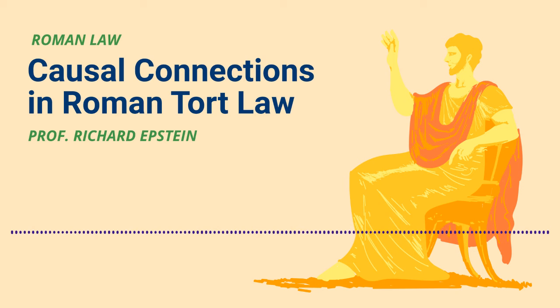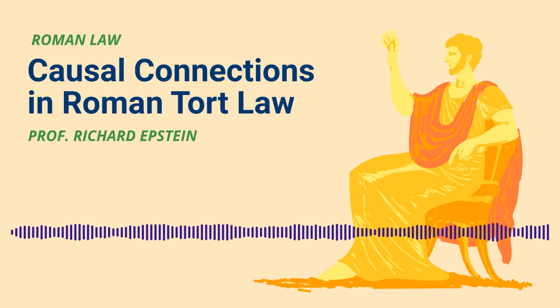At the end of episode 1 on torts, you discussed a bit about how the Romans thought about causal connections. Can you give us a fuller outline about that? How does Roman tort law differ from our modern Anglo-American tort law?